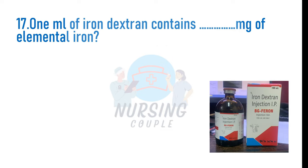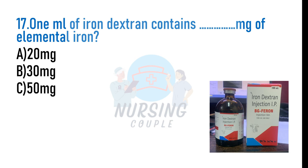1 ml of injection iron dextran contains how many mg of elemental iron? A. 20 mg, B. 30 mg, C. 50 mg, D. 100 mg. The answer is Option C: 50 mg. Each ml of iron dextran contains 50 mg of elemental iron. Iron dextran is an injectable low molecular weight ferric hydroxide complex indicated for patients with iron deficiency anemia where oral iron therapy is ineffective or poorly tolerated.